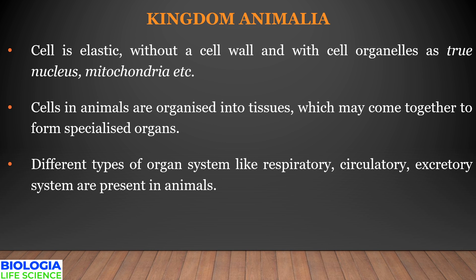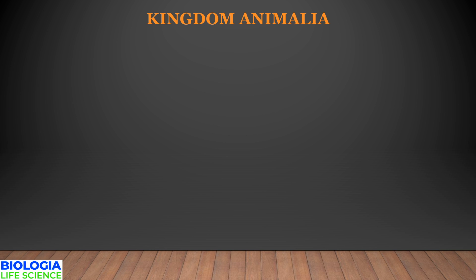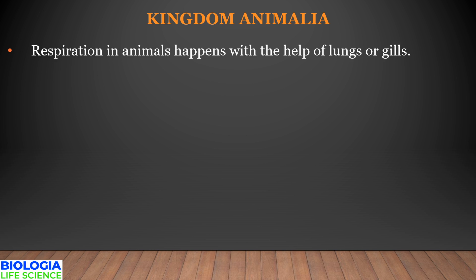Different types of organ systems like respiratory, circulatory, excretory, and digestive are present in these animals. Diversity is not only restricted to appearance, but also to the evolution of organ systems in Animalia.